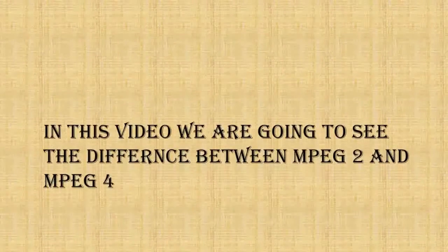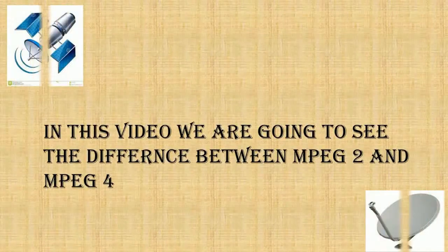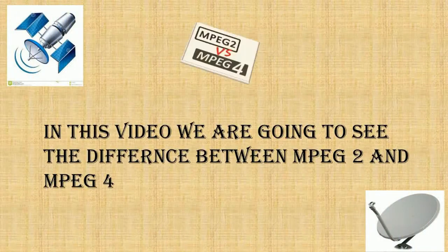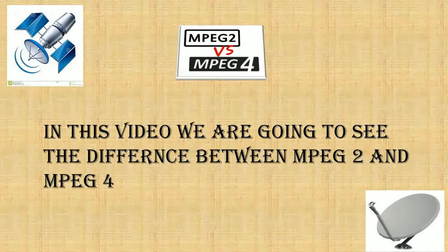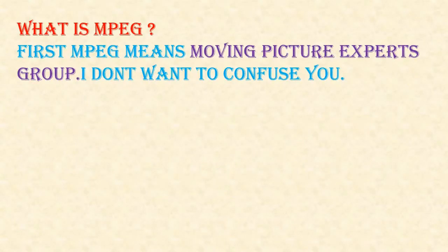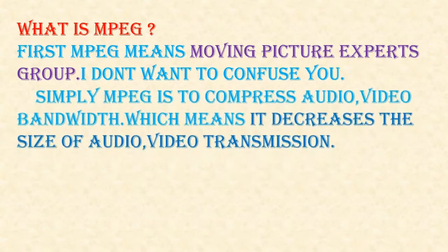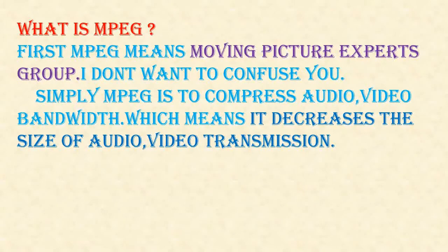In this video we are going to see the difference between MPEG 2 and MPEG 4. First, MPEG means Moving Picture Experts Group. Simply put, MPEG is used to compress audio and video bandwidth, which means it decreases the size of audio and video transmission.